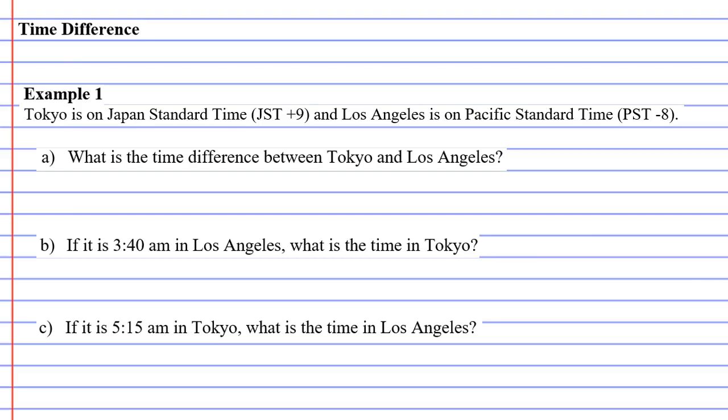In example one, we've got Tokyo, which is on Japan Standard Time, JST +9, and Los Angeles, which is on Pacific Standard Time, -8.